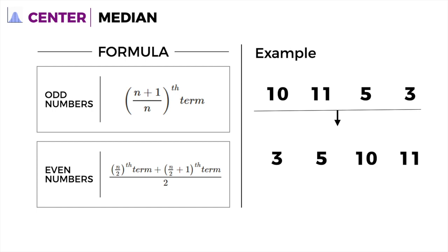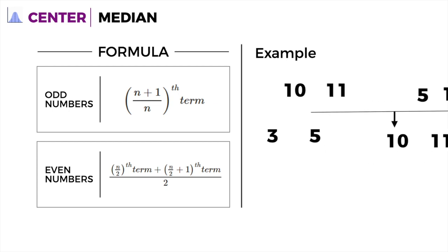After you sort it out, you want to look for the middle number. Let's say we have 13 over here. So if we have 5 items, we have the data set: 3, 5, 10, 11, and 13.